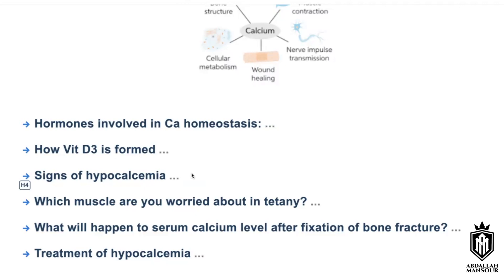Vitamin D3 increases the absorption of calcium at the GIT and reabsorption of calcium at the kidneys. Calcitonin decreases the level of calcium by decreasing bone resorption and osteoclastic activity.